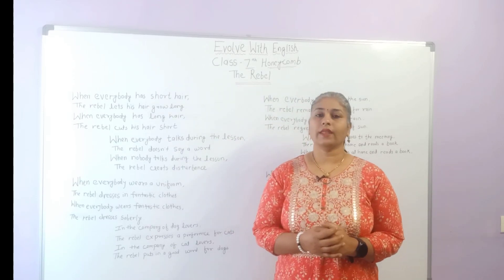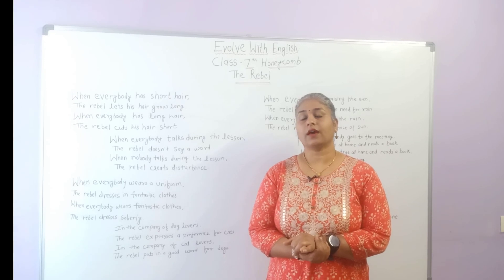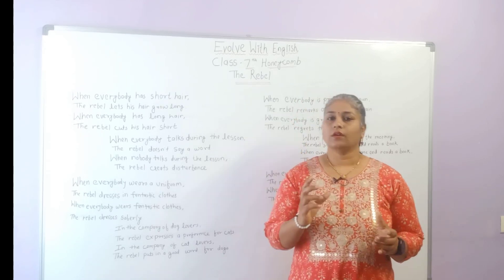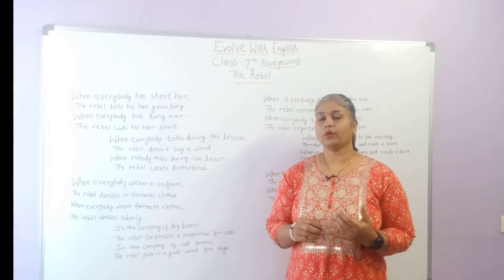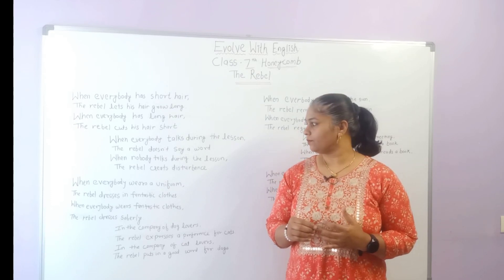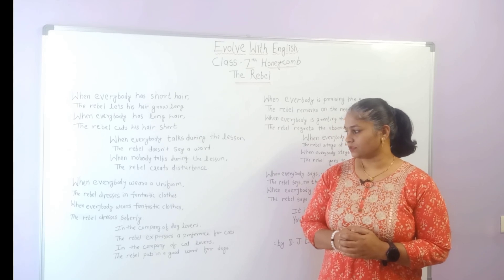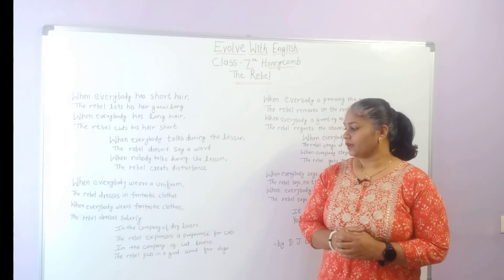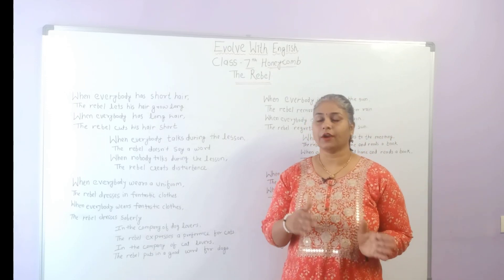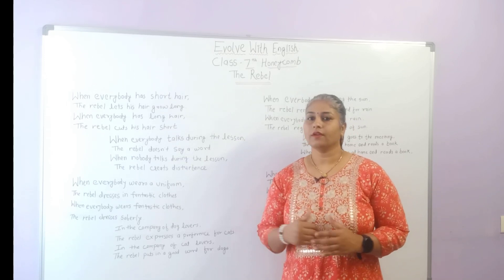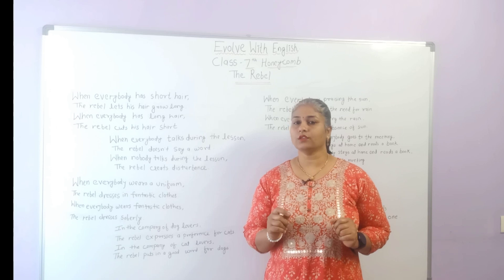About dressing sense — when everybody is wearing a uniform, the rebel will wear fantastic clothes. These are some characteristics of the rebel: how he keeps his hair, how he behaves in class, and how he dresses. In the fourth stanza, the poet says in the company of dog lovers, the rebel expresses a preference for cats. In the company of cat lovers, the rebel puts in a good word for dogs. In every scene, he has to create contradiction — the rebel wants to behave in the opposite manner.